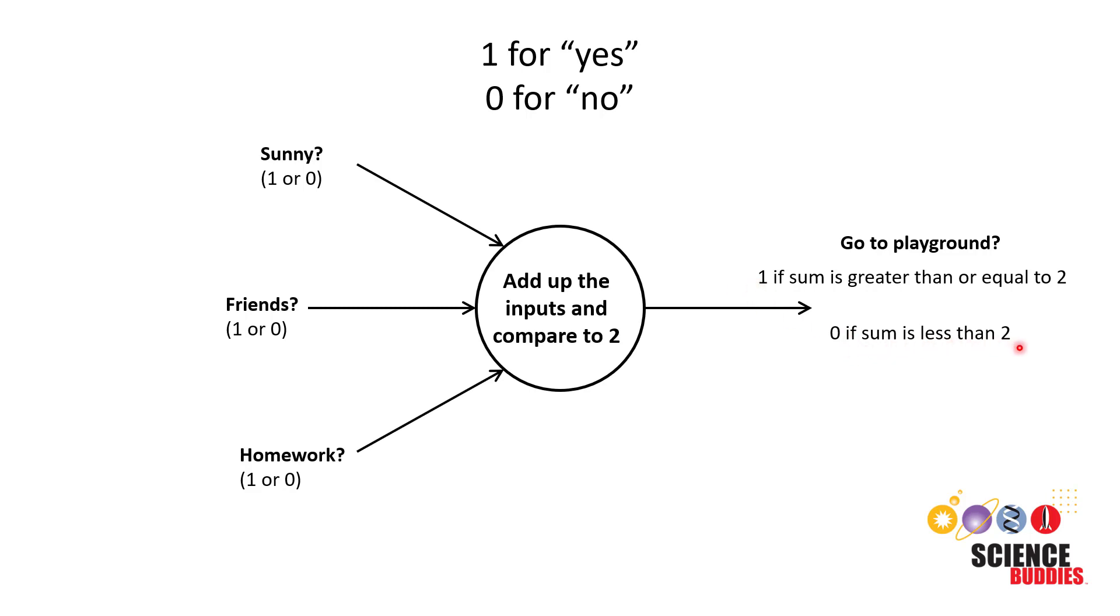And if the sum is less than two, then our output would be zero for we should not go to the playground. This approach works if all of the inputs are equally important to you. But for example, say that you really want to see your friends and you don't care that much if it's sunny because you can just put on a jacket if it's chilly out. And to account for that, we can give each input a multiplier or a weight.